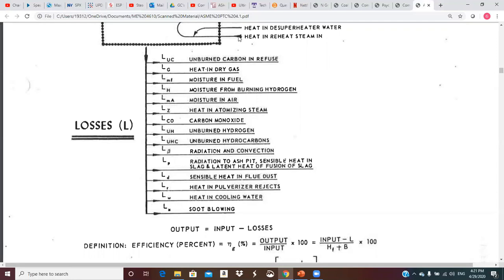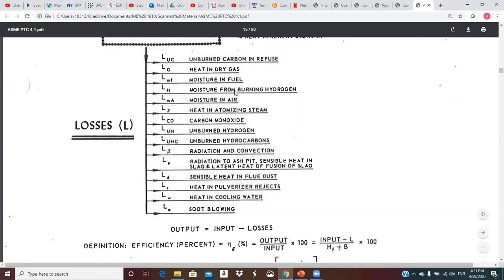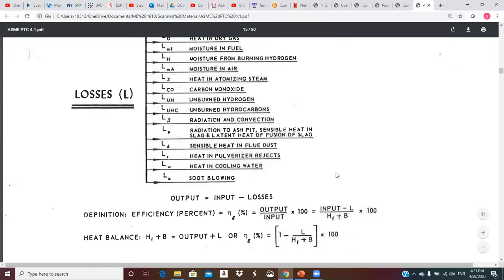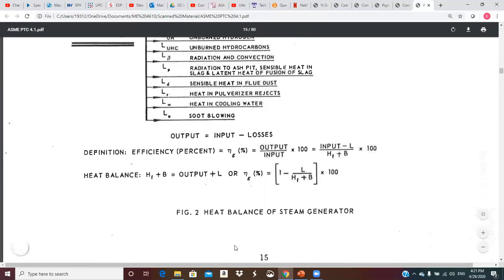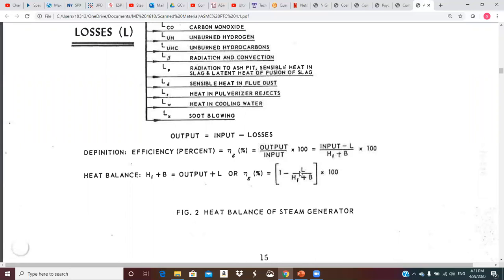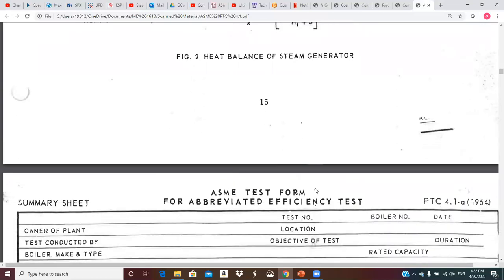So potentially 15 potential losses. So output is equal to input minus losses. You can do a little bit of algebra here. And so you wind up with an equation, one minus the losses divided by the chemical energy plus the sum of the credits, times a hundred is your boiler efficiency, or you can just do it output minus input or input minus losses divided by input. So you've got two different equations there that can be used.